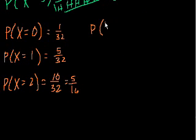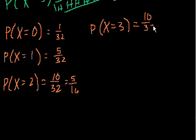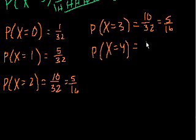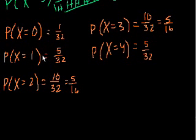The probability of getting three heads was also 10 over 32, equal to 5 over 16. That makes sense because the probability of getting three heads is the same as getting two tails, and the probability of two tails equals the probability of two heads. The probability of getting four heads was 5 over 32, because four heads is the same as one tail, which equals the probability of one head.